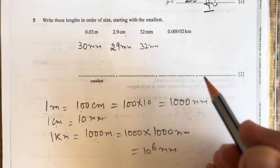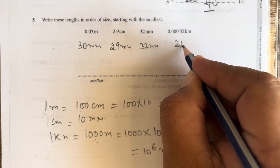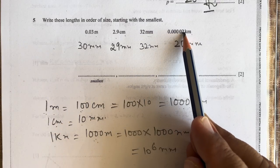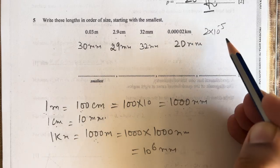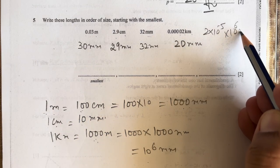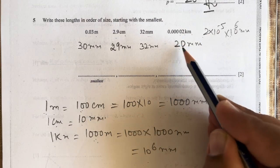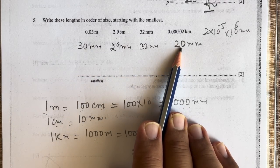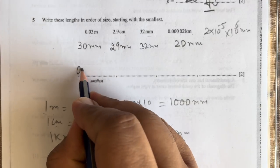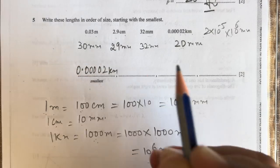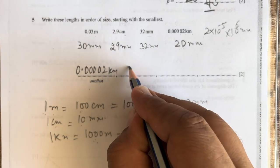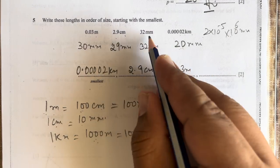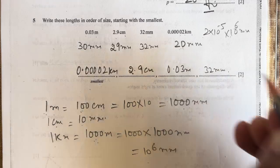0.00022 kilometers: multiply by 10⁶ to get 220 mm. 2 × 10⁻⁵ km, multiply by 10⁶ to get mm, so we get 2 × 10¹ = 20 mm. Now we have to write them smallest to largest. The smallest is 20, so 0.00002 km, then 29 (2.9 cm), then 30 (0.03 m), then 32 mm.